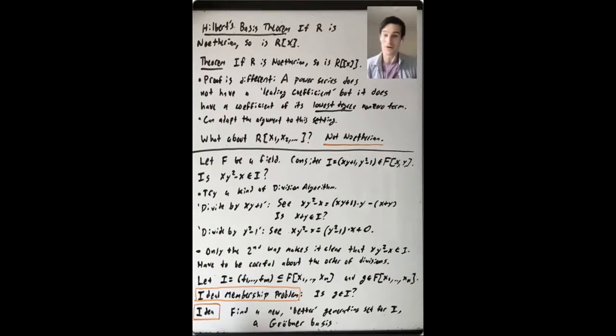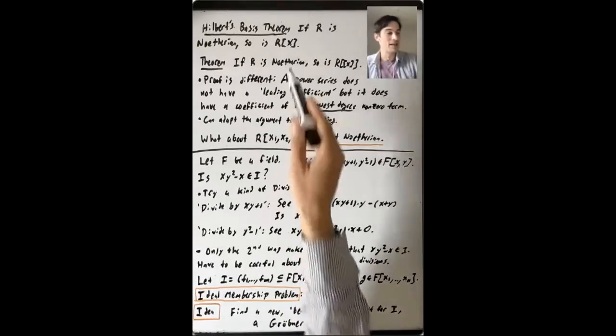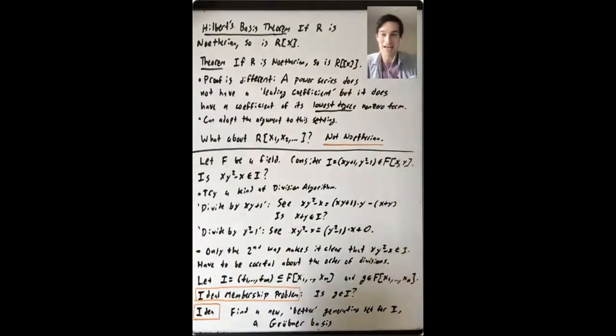How does the proof go? Well, it has to be different. Why? Because the whole thing that made both of our proofs of Hilbert basis theorem work was we have a bunch of polynomials in I and we take the leading coefficient of each. We take a collection of leading coefficients, either the ideal generated by all of them or just all of the leading coefficients of the polynomials in I, and we get an ideal in R.